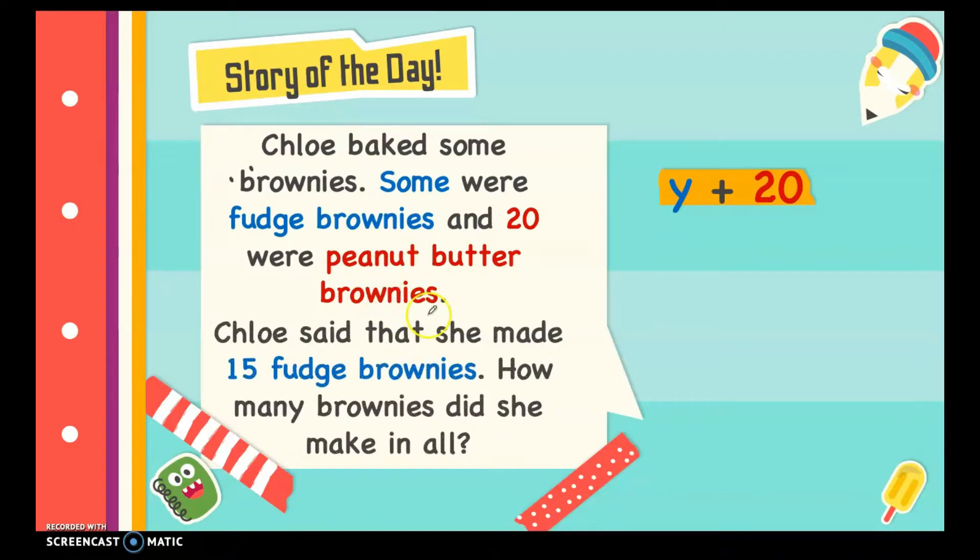Chloe said that she made 15 fudge brownies. How many brownies did she make in all? The fudge brownies is already given, which is 15. That means this 15 is substituted for y since Chloe said she made 15 fudge brownies. And we can now find the total number of brownies she made.